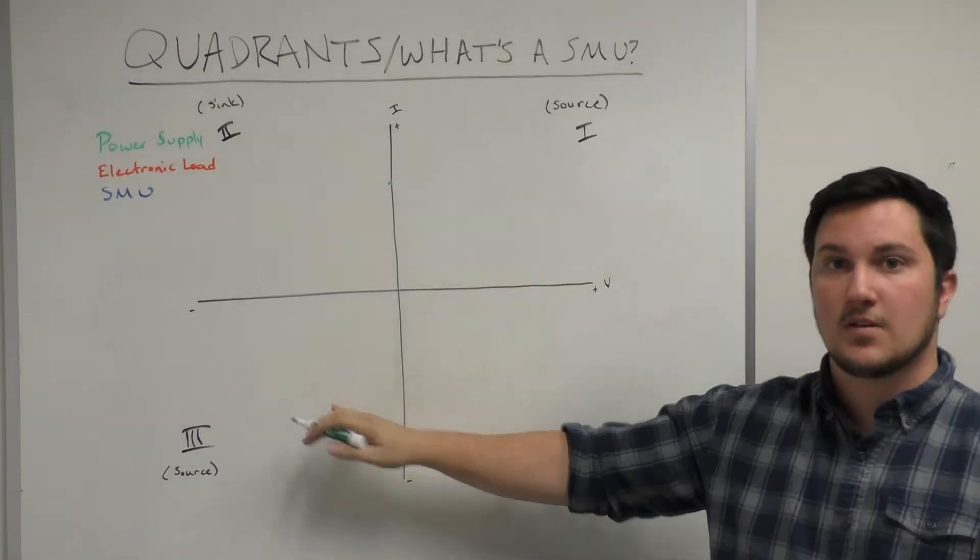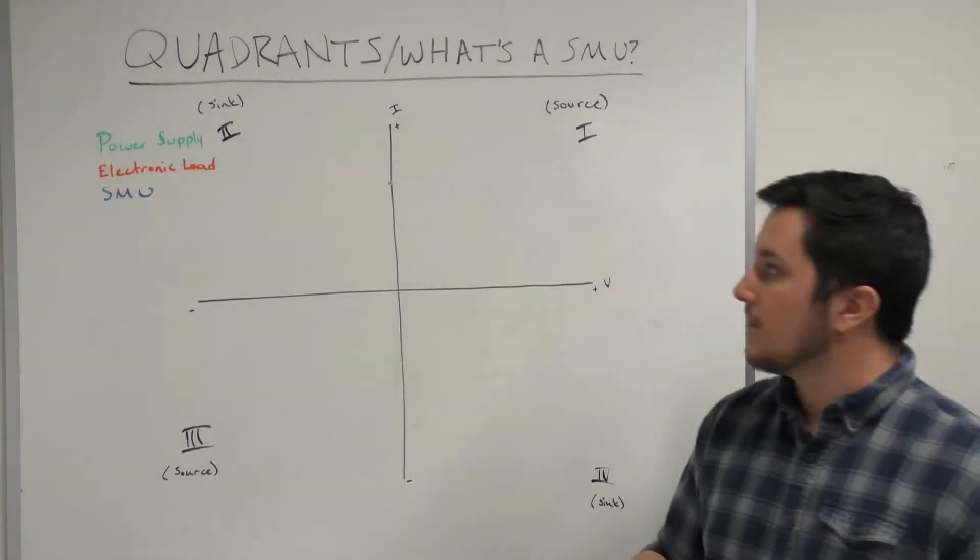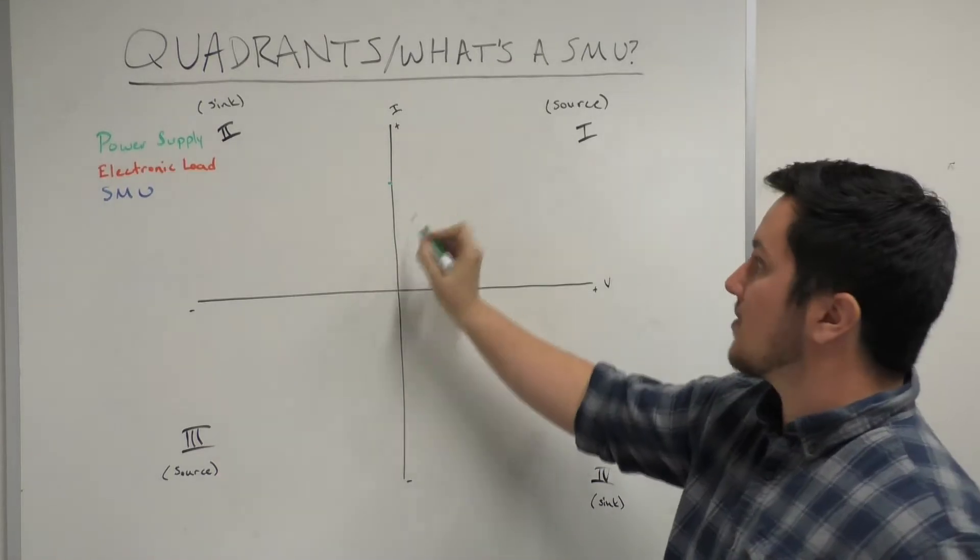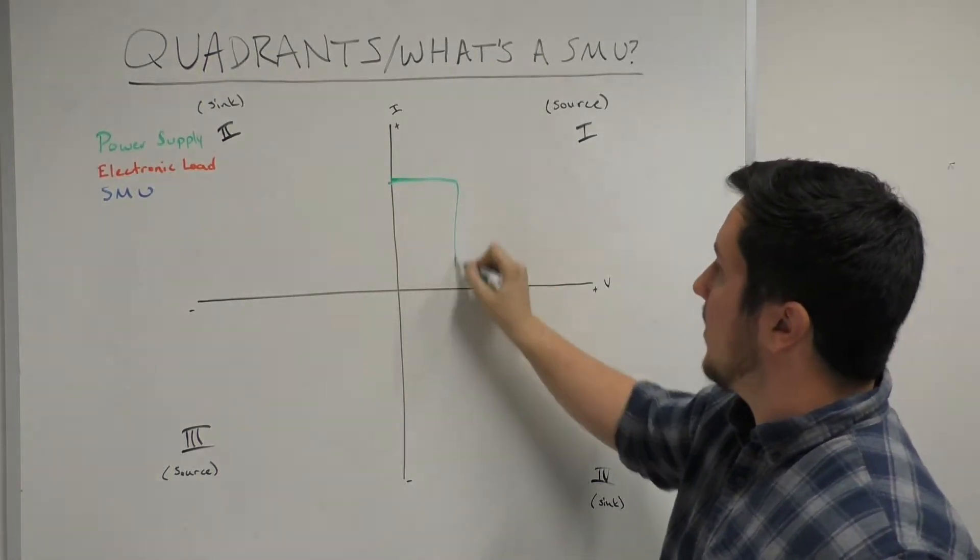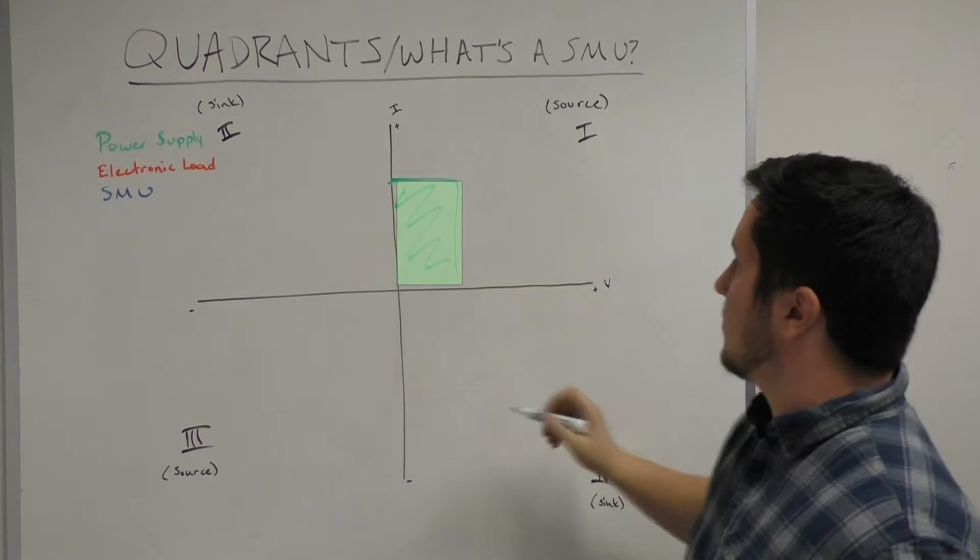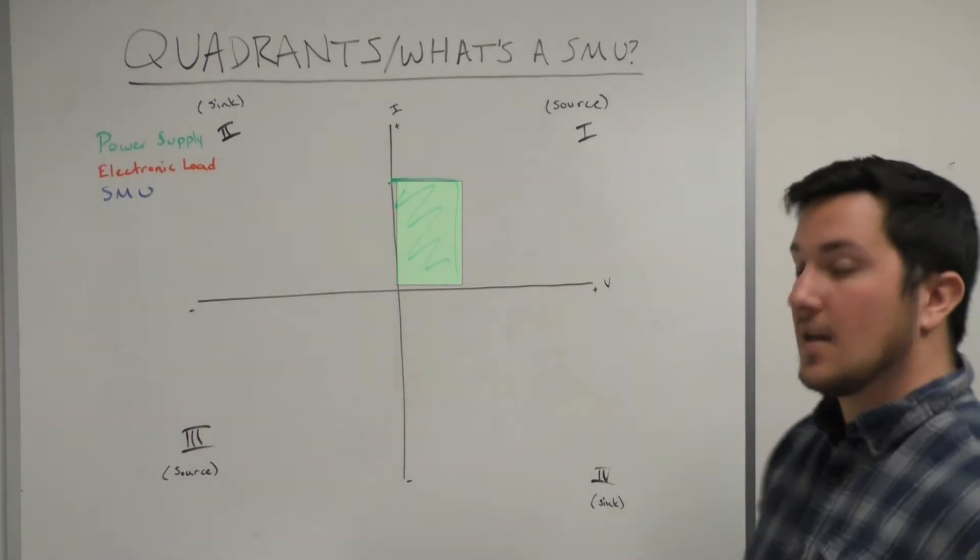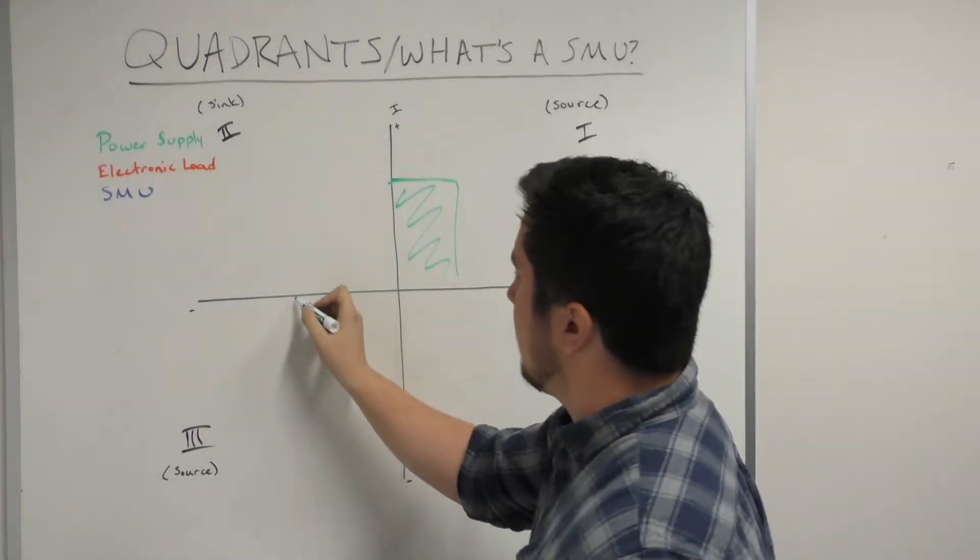Quadrants 1 and 3 describe the sourcing capabilities. A unipolar power supply operates in quadrant 1 because it can only source positive voltage.